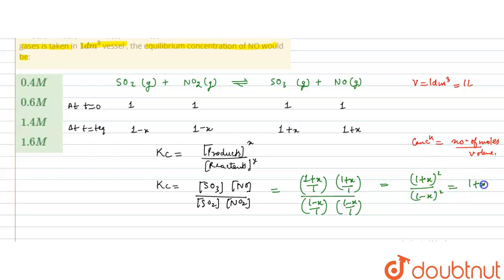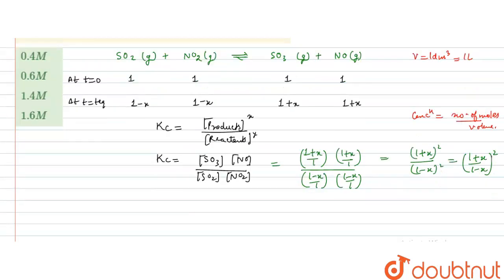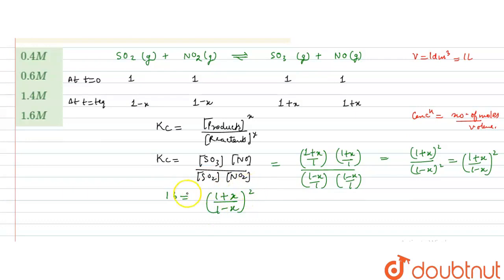We can write this as [(1 + x)/(1 − x)]², and Kc is given as 16. So 16 = [(1 + x)/(1 − x)]². Taking the square root of both sides: √16 = (1 + x)/(1 − x).